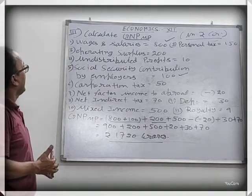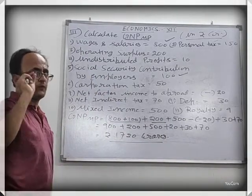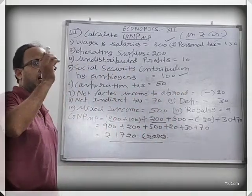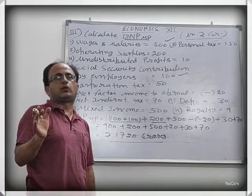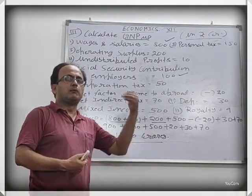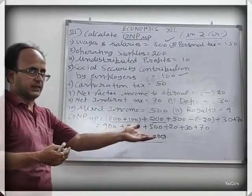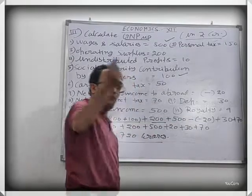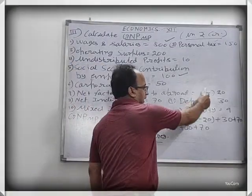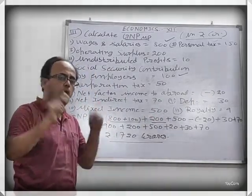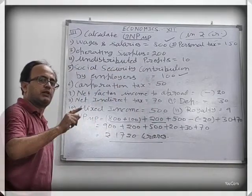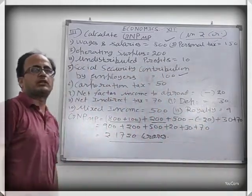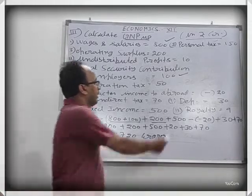Then we add NFIA — Net Factor Income From Abroad. NFIA has two components: Factor Income Received From Abroad and Factor Income Paid To Abroad. We need to be careful when NFIA is negative. The NFIA value here results in a negative contribution to the formula.